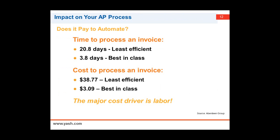Through an Aberdeen Group report, you can see that if your account payable processes are done manually, the time to process an invoice is close to 20 working days — that's almost a month. Whereas EIP provides best-in-class performance at around three and a half days. More than that, the manual cost is around $38 to process an invoice, whereas by choosing a product like EIP you get $3 to process an invoice.